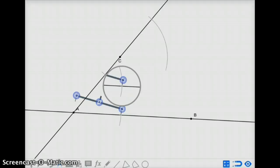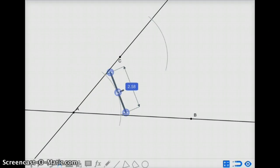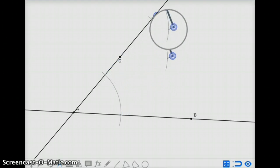Using my compass, I measure the distance between those two points of intersection, and bring it up to my second location.